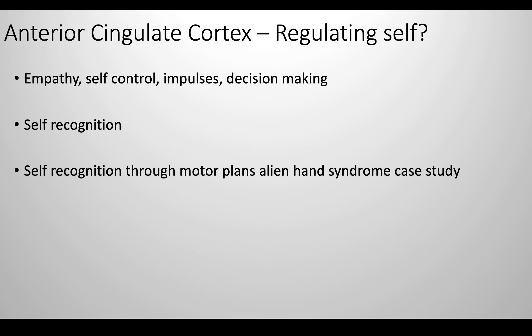Moving on, I'm going to be talking about the anterior cingulate. This was thought to be involved in empathy and self-control, impulses and decision-making, but also self-recognition, as discovered by some of our case studies. In alien hand syndrome, theoretically, part of the disorder was the inability to recognize the hand and hand movements as one's own. This was theoretically thought to be due to the disconnect of the motor areas of the brain with the anterior cingulate cortex, preventing recognition of the movement or motor plan as one's own.